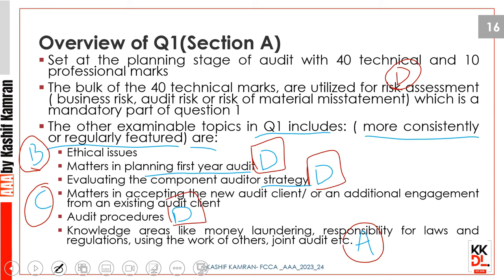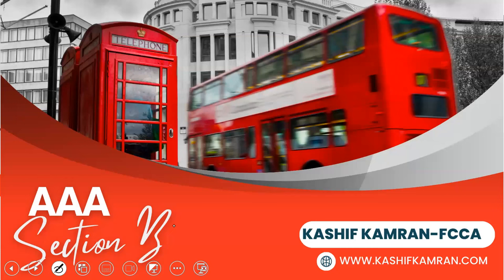Other regularly featured topics in Question 1, besides the substantial marks going on risk, include: ethical issues (syllabus area B), matters in planning the first-year audit (area D), evaluating the component auditor strategy (area D), planning matters in accepting a new audit client or additional engagement (area C), audit procedures (area D), and knowledge areas like money laundering, auditor responsibility for laws and regulations, and using the work of others or joint audit (area A). So A, B, C are flexible and can appear in Section A too, but D has the substantial hold on Question 1.